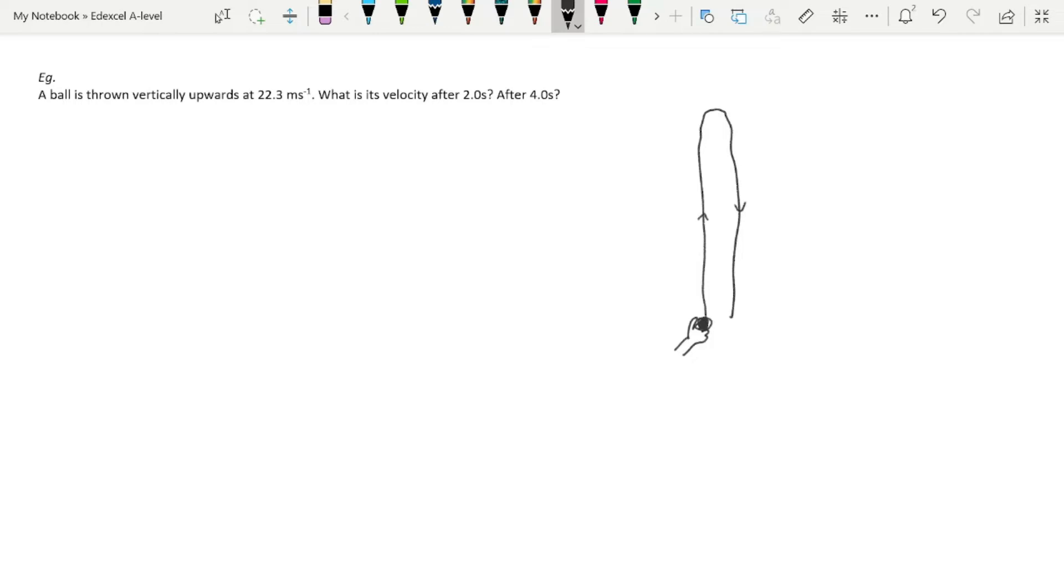I've drawn the motion next to each other like this. We can assume it goes vertically up and comes vertically down. We know it's 22.3 meters per second up, and we want its velocity after 2 and 4 seconds.